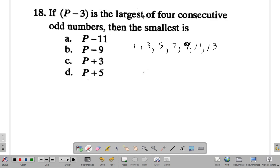P-3 is the largest of four consecutive odd numbers. These are just examples, but let's say we have P-3 - what is the largest? What's the second largest? What's the one behind this?